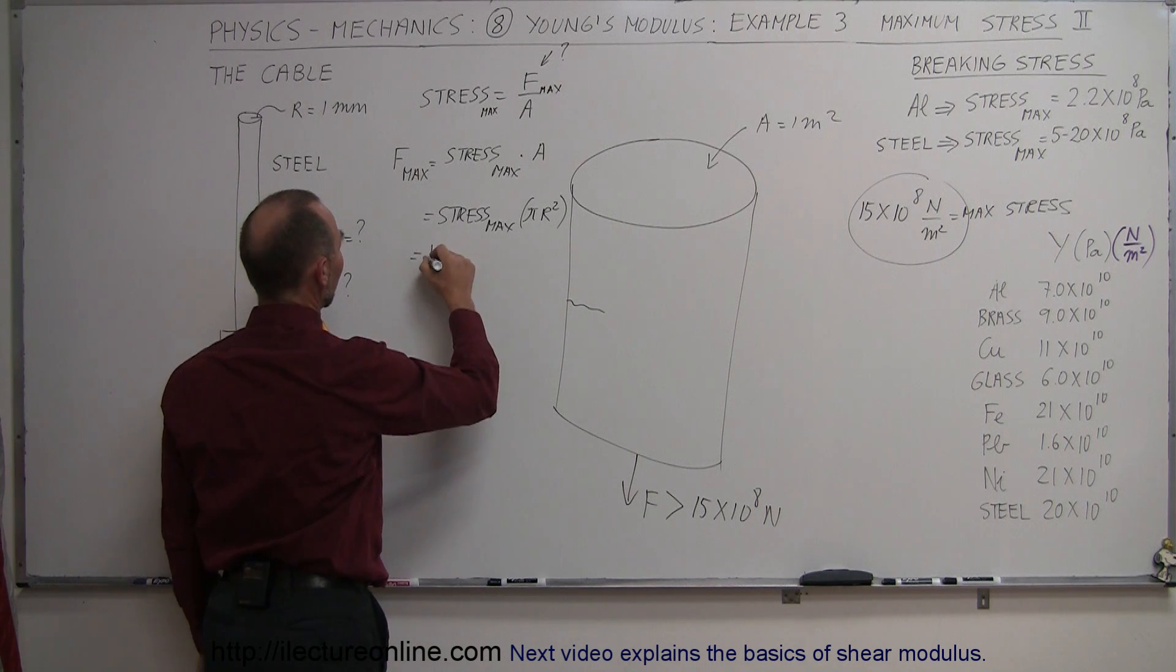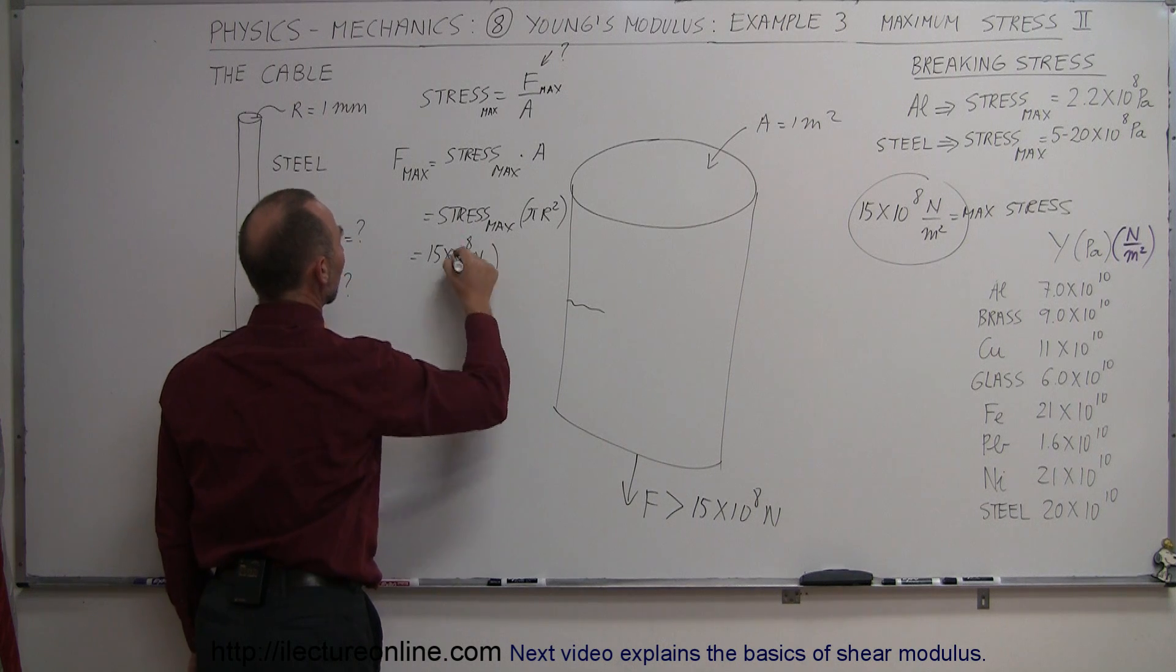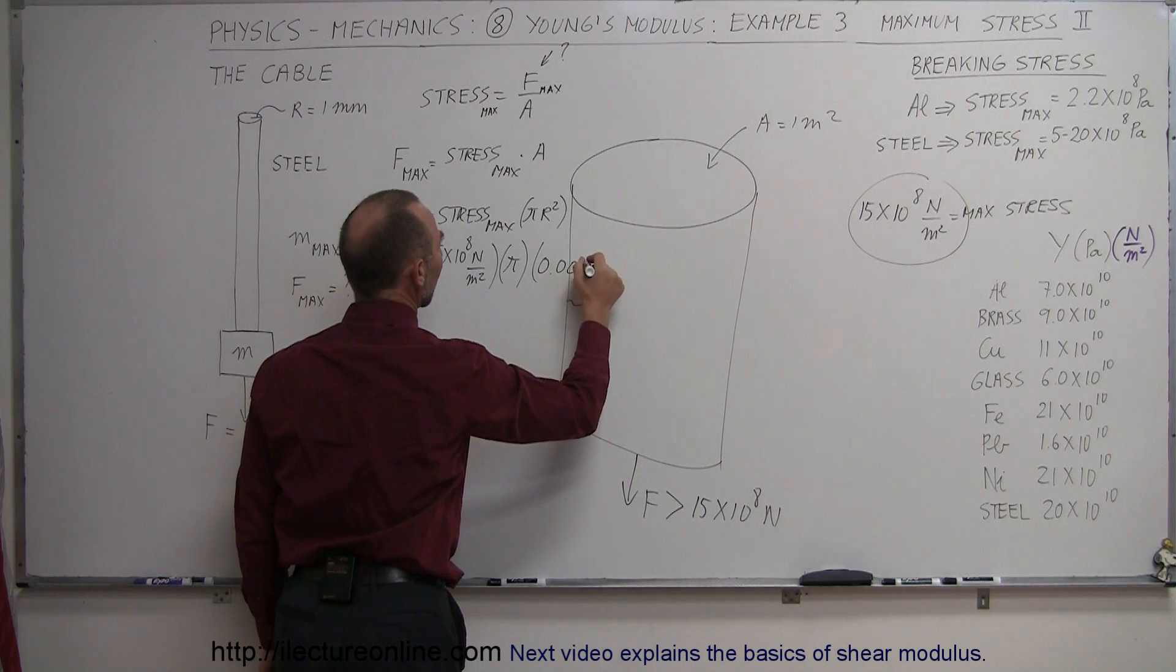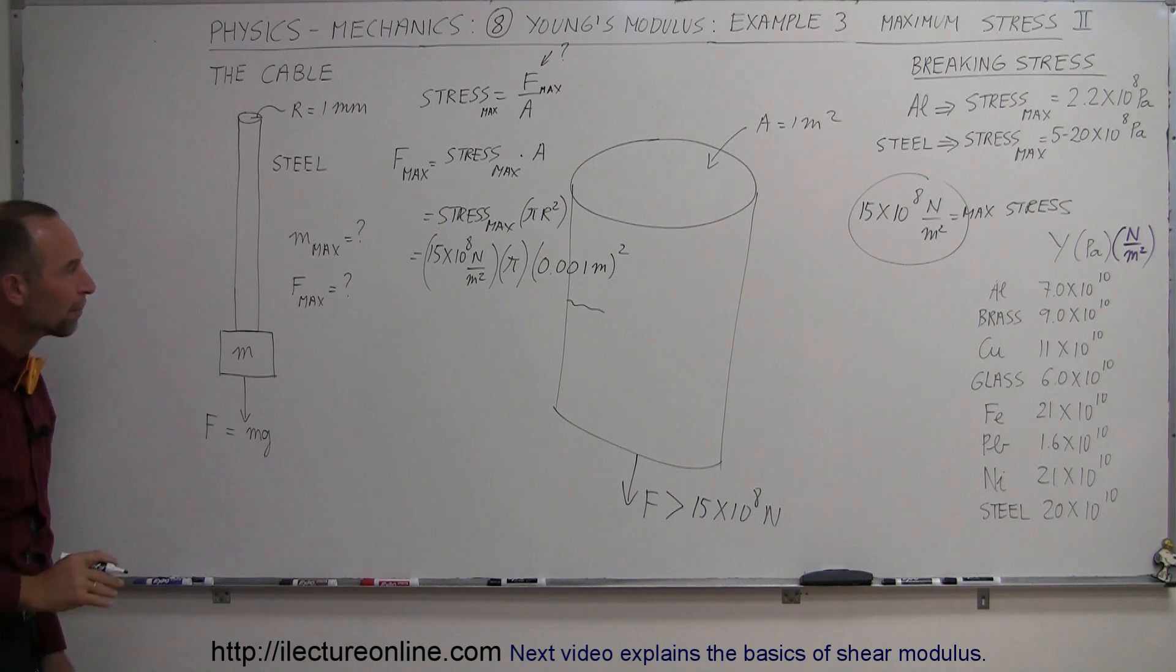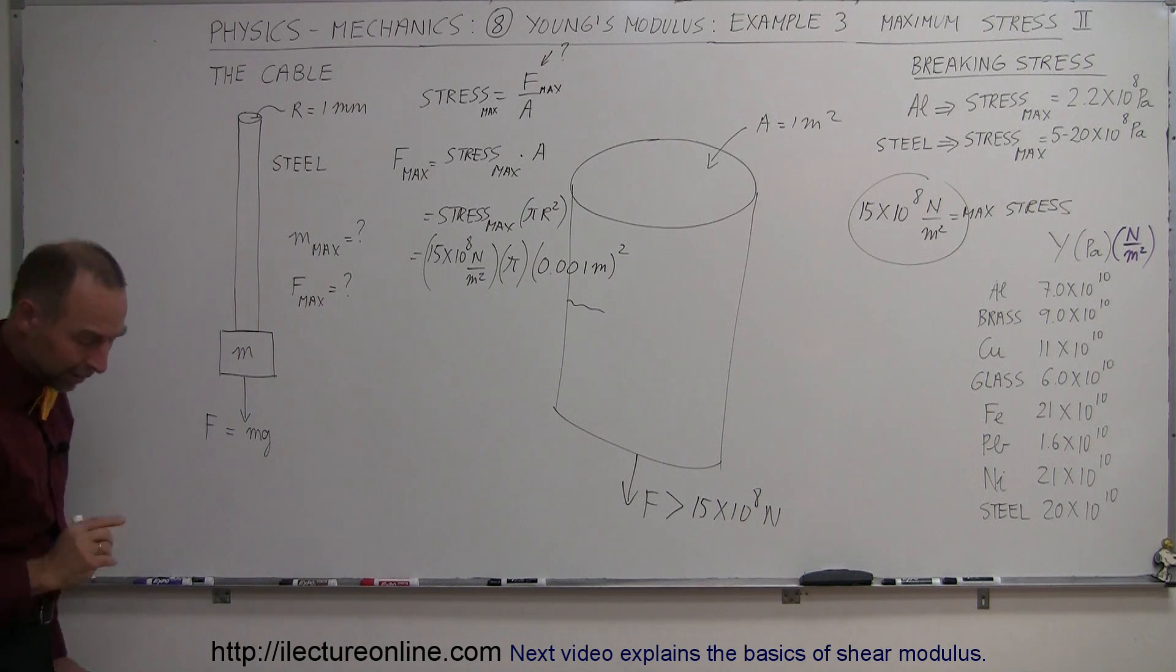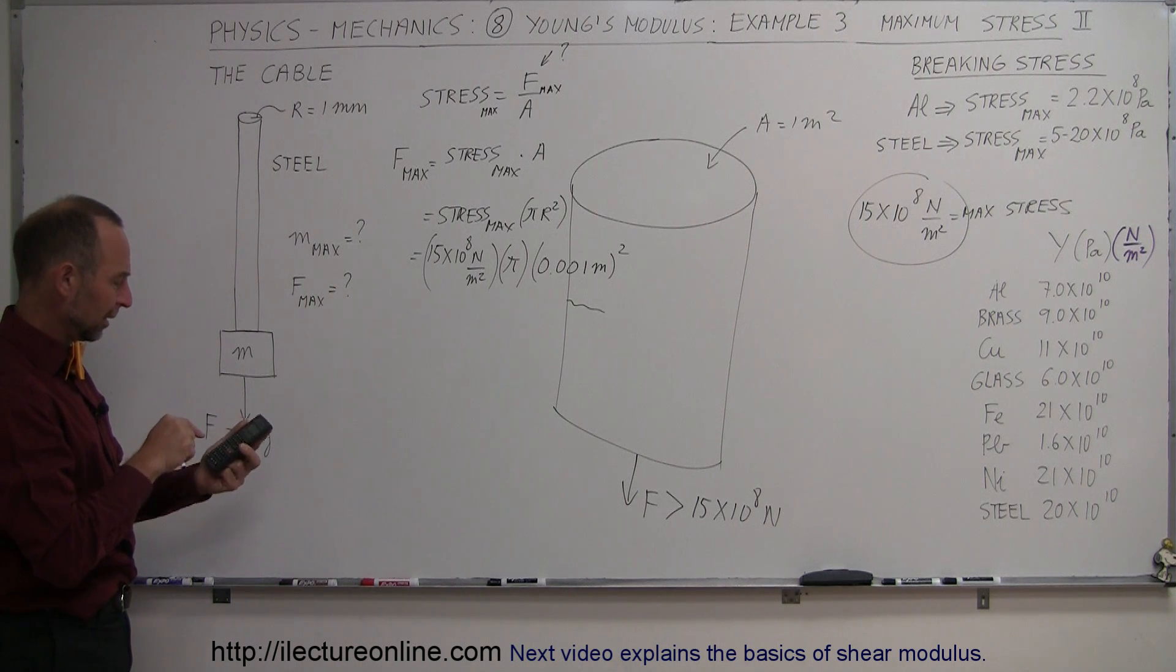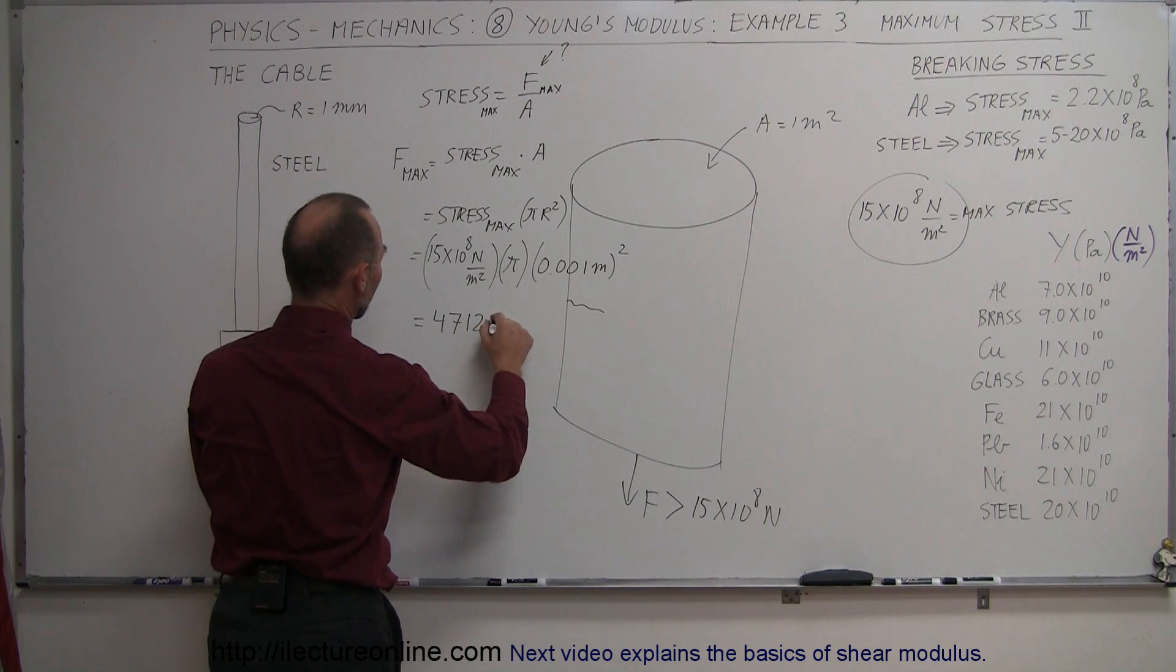For steel, the maximum stress was 15 times 10 to the 8 newtons per square meter. We have to multiply that times pi, and times the radius squared, that would be 0.001 meters squared. I'm drawing a little bit into the drawing here, made it a little big. Notice the millimeter is 1/1000 of a meter, so we square that, and now we need a calculator. 15e to the 8 times pi times 0.001 squared equals, and that gives us a force of 4,712 newtons.